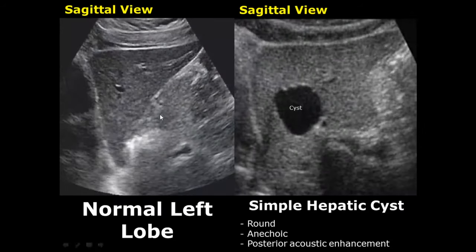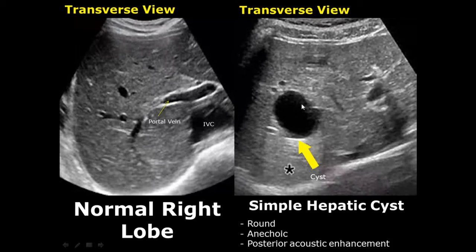A simple hepatic cyst will be round, anechoic, and have posterior acoustic enhancement. This cyst is present in the left lobe, and this is a sagittal view. Here is a transverse view of a simple hepatic cyst in the right lobe of the liver.